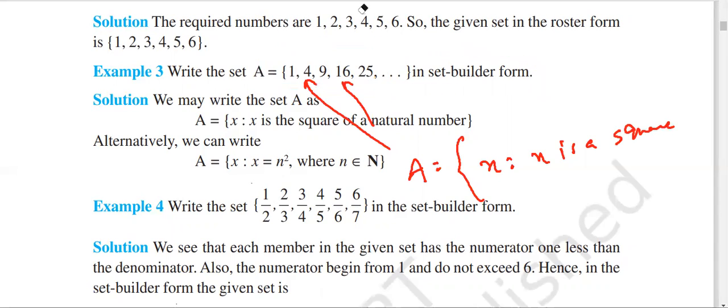Infinity. 1 to infinity - we don't need to write this. We have to write: X is a square of natural numbers.